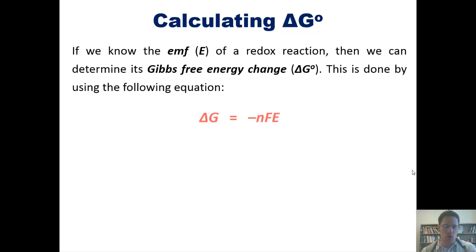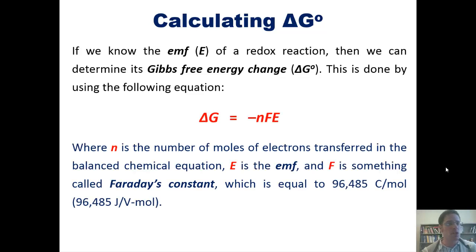This is done by using the following equation, where N is the number of moles of electrons transferred in the balanced chemical equation, E is the EMF, and F is something called Faraday's constant, which is equal to 96,485 coulombs per mole, which is the same thing as joules per volt mole.